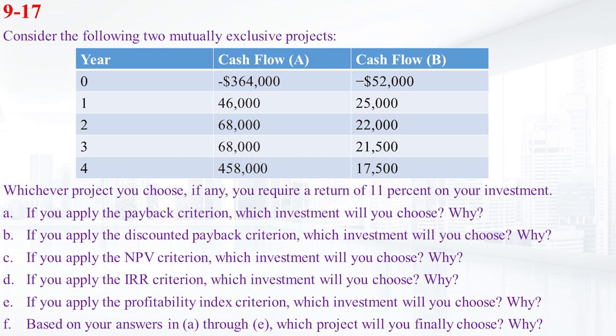If you apply the discounted payback period criterion, which investment will you choose and why? If you apply the NPV criterion, which investment will you choose and why? If you apply the IRR criterion, which investment will you choose and why? If you apply the profitability index, which investment will you choose and why? And lastly, based on your answers in A through E, which project do you finally choose and why?